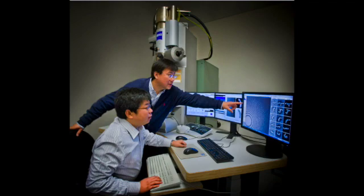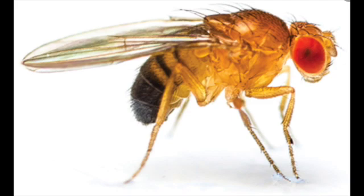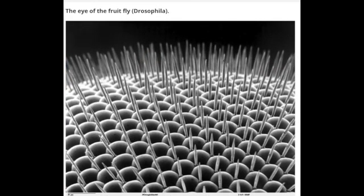Besides light microscopes, scientists use electron microscopes. A scanning electron microscope can magnify an object up to one million times. This microscope shoots a beam of electrons at the object, and an image of the surface appears on a computer screen. Check out what a fruit fly looks like under an electron microscope — this photograph is the eye of the fruit fly. An electron microscope can magnify items much more than a light microscope.